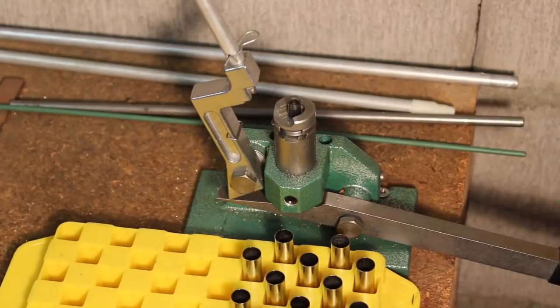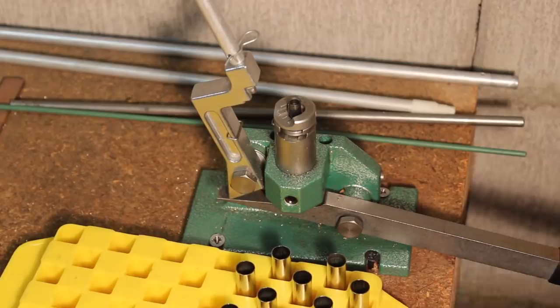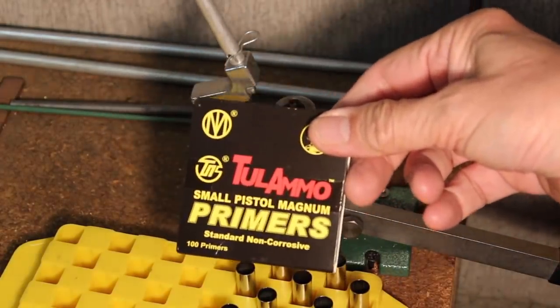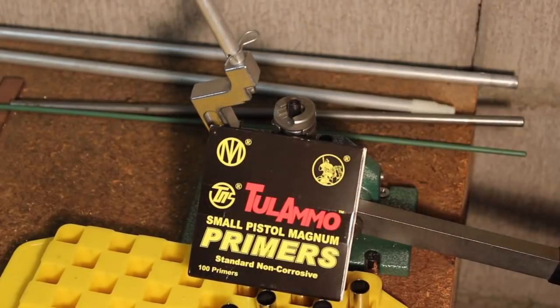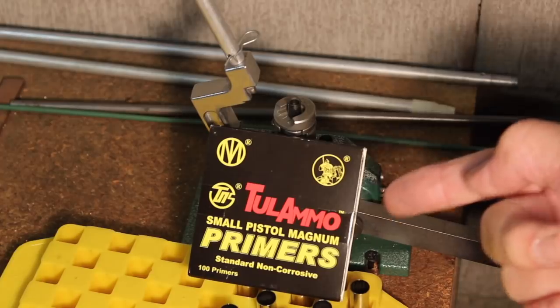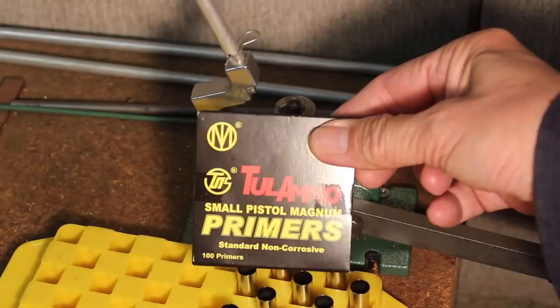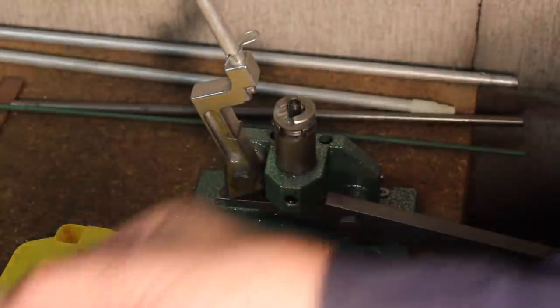And this happens to be a device called an RCBS bench prime tool. And what it does, it installs these small pistol magnum primers made in Russia. So we got a Russian collusion here.